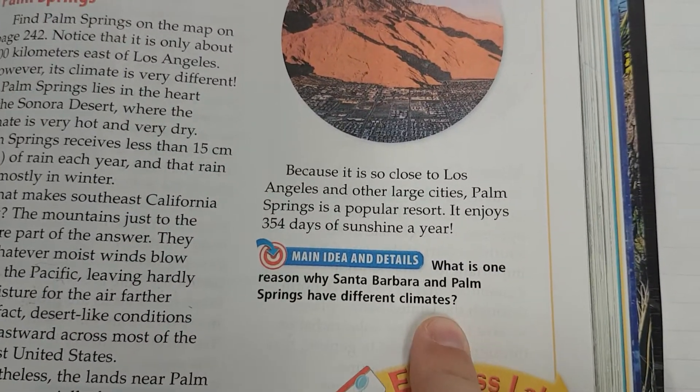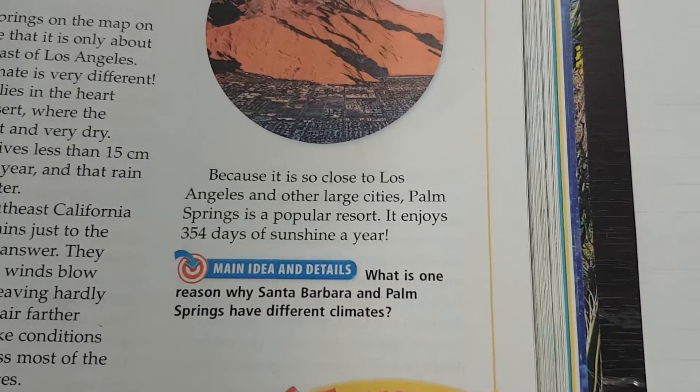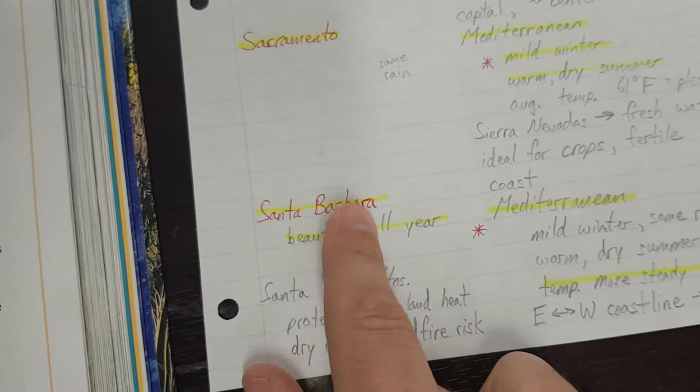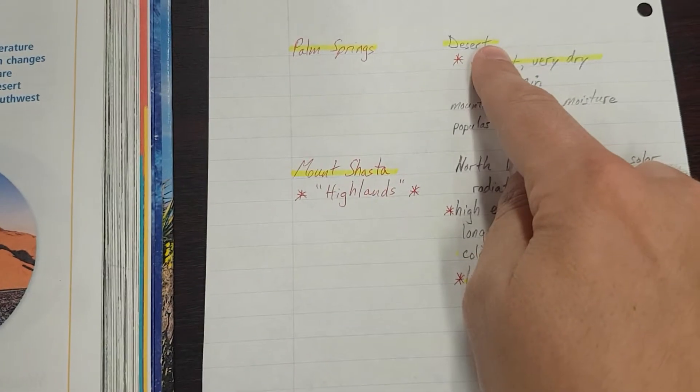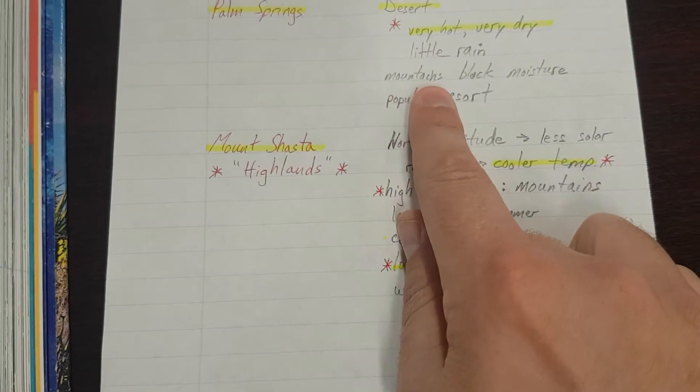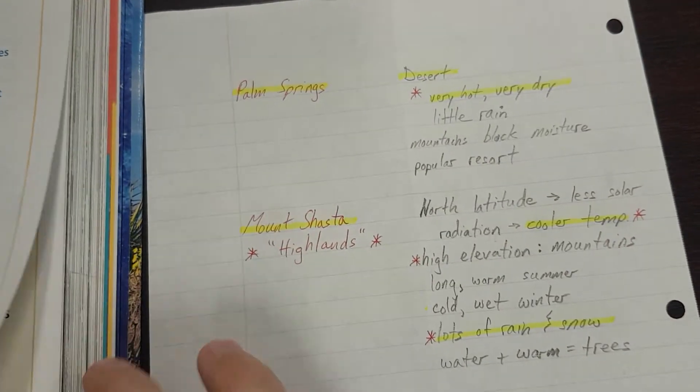What is one reason why Santa Barbara and Palm Springs have different climates? One reason why Santa Barbara and Palm Springs have different climates is that Santa Barbara is along the coast, so temperatures are more steady, while Palm Springs is a desert inland behind mountains that block off most of the moisture.